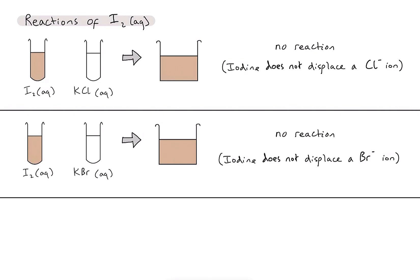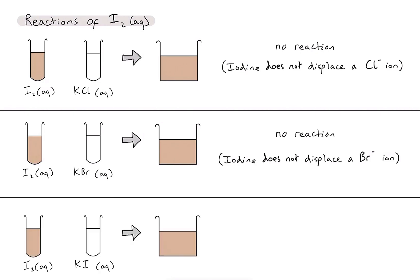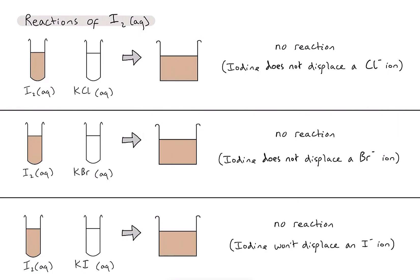And the final one — although there's no need to even do this really — we've got iodine and the iodide ion, they're both from the same element, so nothing's going to happen. The iodine simply won't displace an iodide ion because they are both species from the same element.